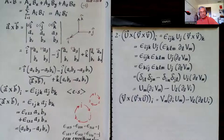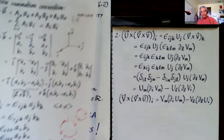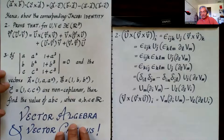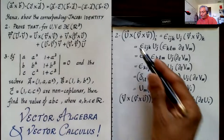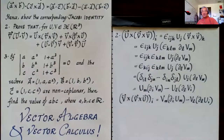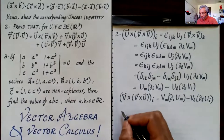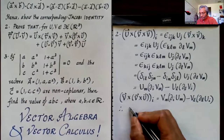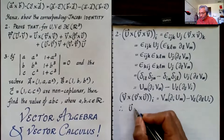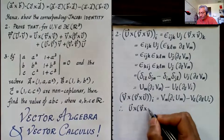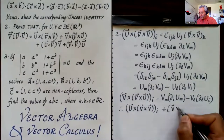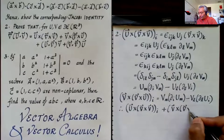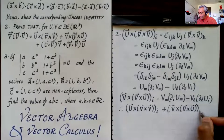By symmetry (interchanging u and v), the i-th component of v×(∇×u) is v_m ∂_i u_m − v_l ∂_l u_i. So we have four terms in total when adding the two cross-product expressions. We hoped two terms would combine — let's verify this by comparing with the target expression.